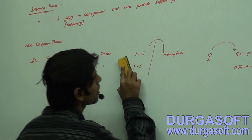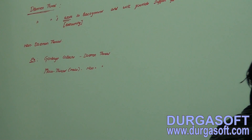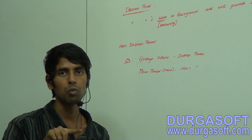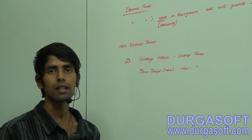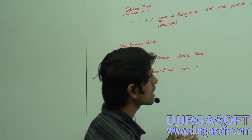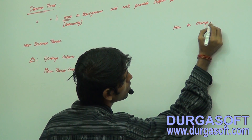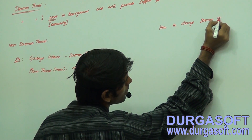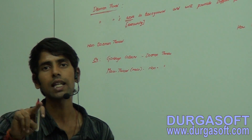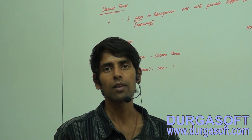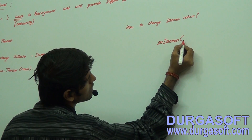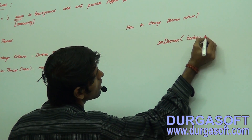Now let's look at the default daemon nature. Before that, let's understand how to change the daemon nature of a thread in Java — this is technically important. We can change the daemon nature using setter and getter methods available in the Thread class. Both are final instance methods.